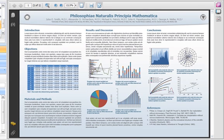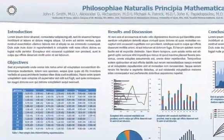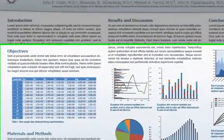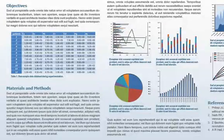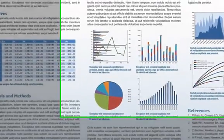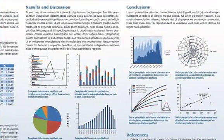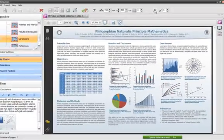It is important to note that Poster Optimizer automatically adjusts not only the font size, but a variety of other typographic parameters, such as line height and paragraph space, in order to ensure maximum readability and a typographically aesthetical result.